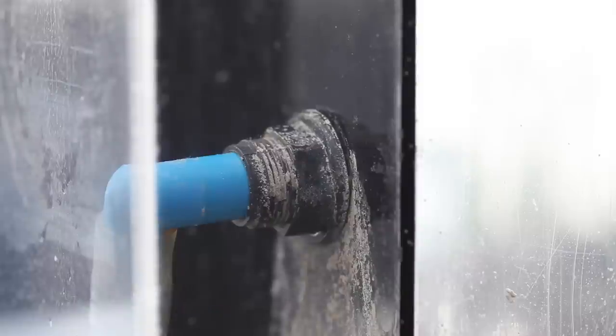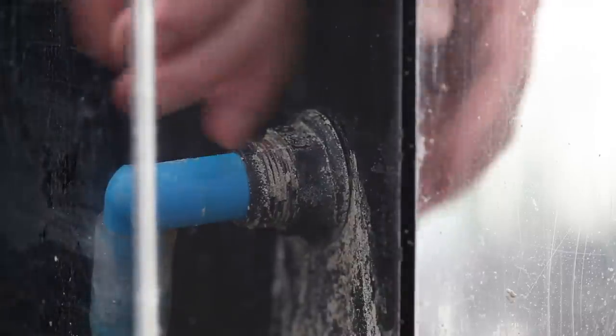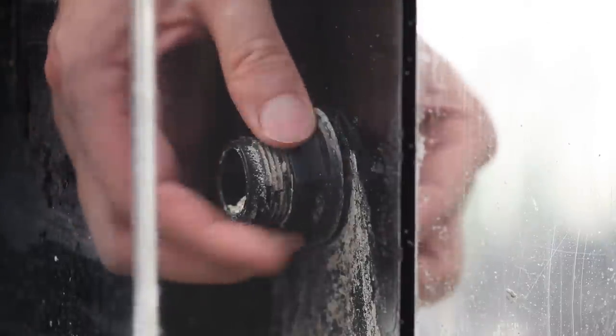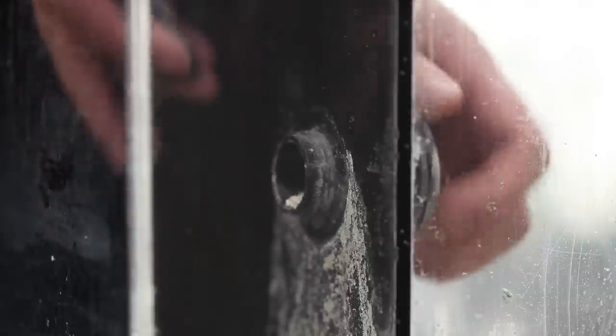At the greenhouse, we have a bucket where we are always tossing in fittings and equipment that need a vinegar soak. One thing that you can do to really speed up the cleaning power of vinegar is to turn on one of the small pumps in the bucket. In addition to really cleaning that particular pump, it helps clean everything else in the vinegar bath as well.